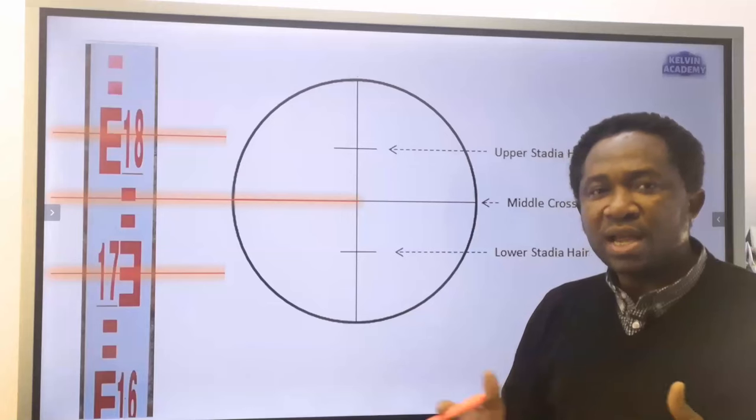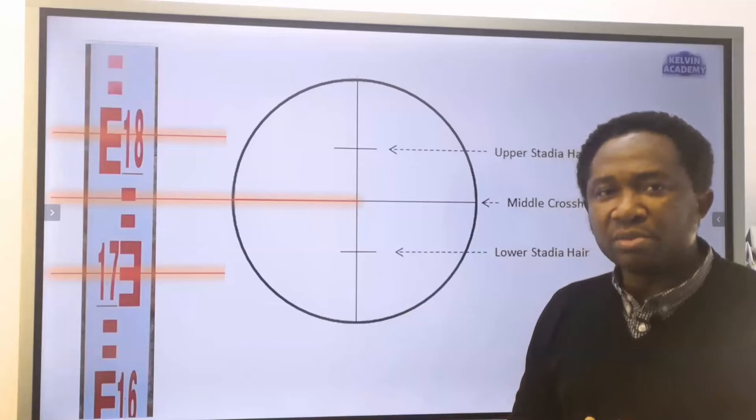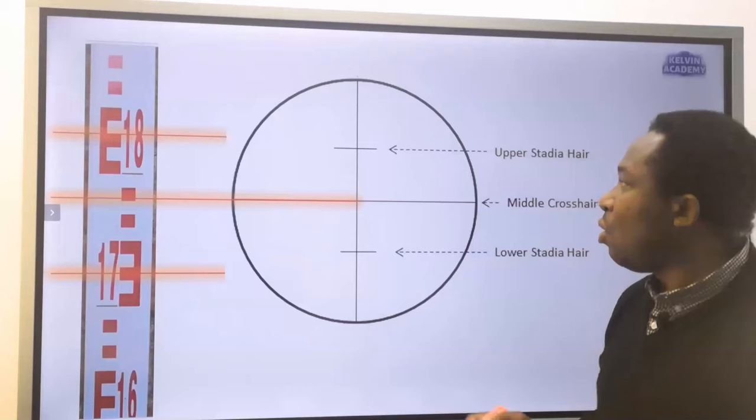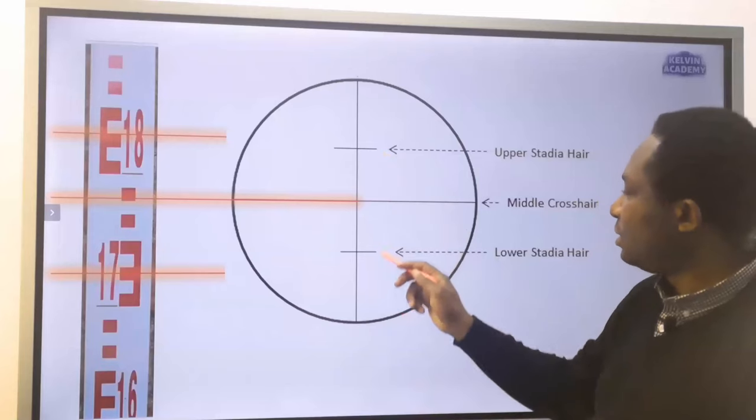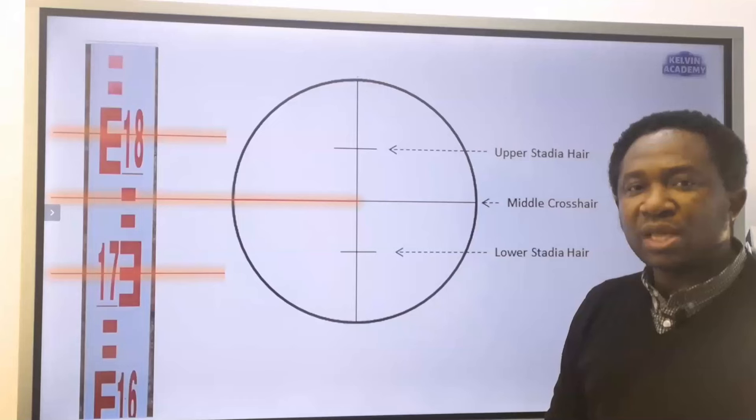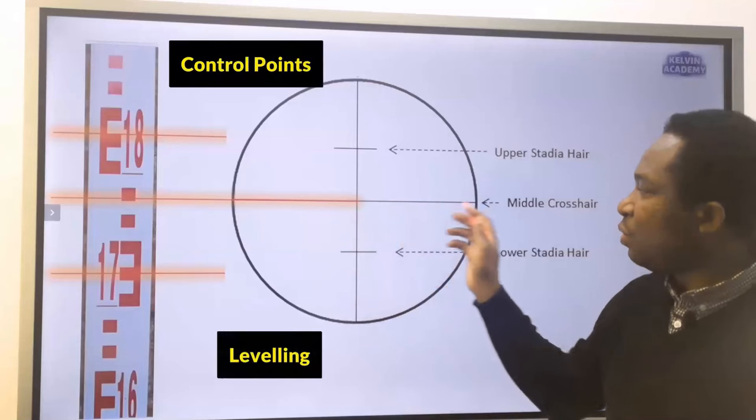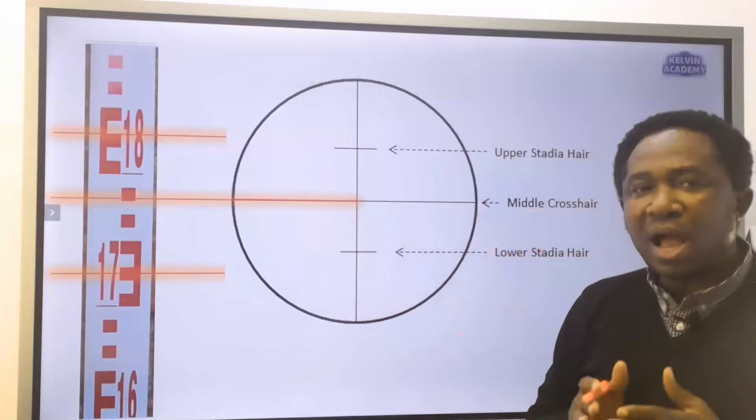To calculate linear distance on the ground, we need only the top hair and the bottom hair. The middle cross hair can be used for control points and leveling.